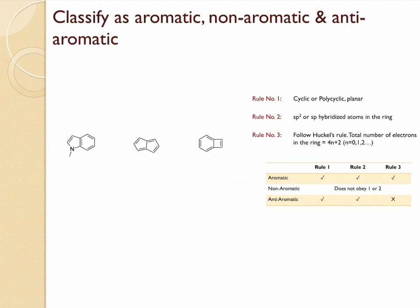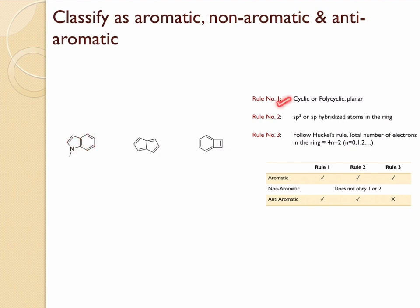Now we have some bicyclic structures. For the first compound, all atoms are sp2 hybridized and nitrogen makes itself sp2 hybridized by donating its lone pair of electrons. Rules one and two are obeyed. Counting the electrons for rule three: there are four pi bond pairs and nitrogen donates one more, giving five electron pairs — an odd number — so this falls under the 4n+2 system and is aromatic.